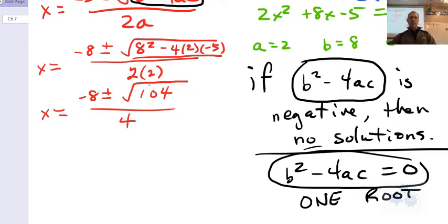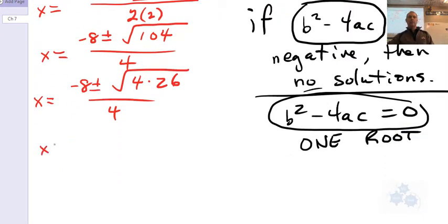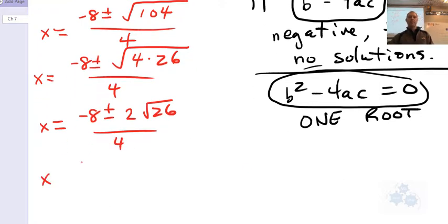So this is how this works now. Can we reduce root 104? Can we reduce 104? So is there a perfect square that's a factor of 104? So what you'd want to see here is that this is actually root 4 times 26. And so in order to reduce this, you want to bring that root 4 out as a 2. So this is going to be negative 8 plus or minus 2 root 26 over 4. So we see that in each term, there's a common factor of 2. So I can take a 2 out of all of that.